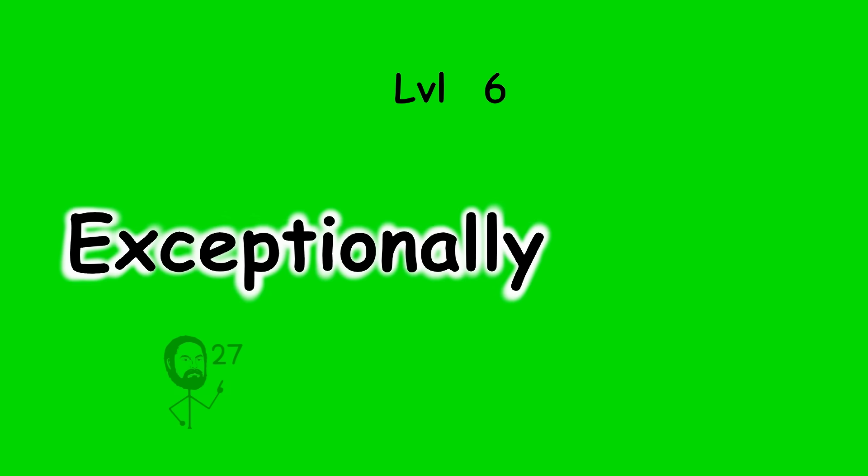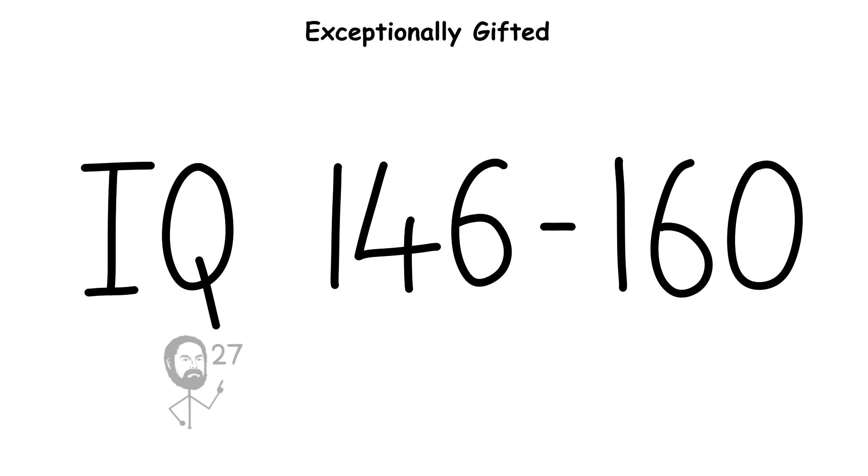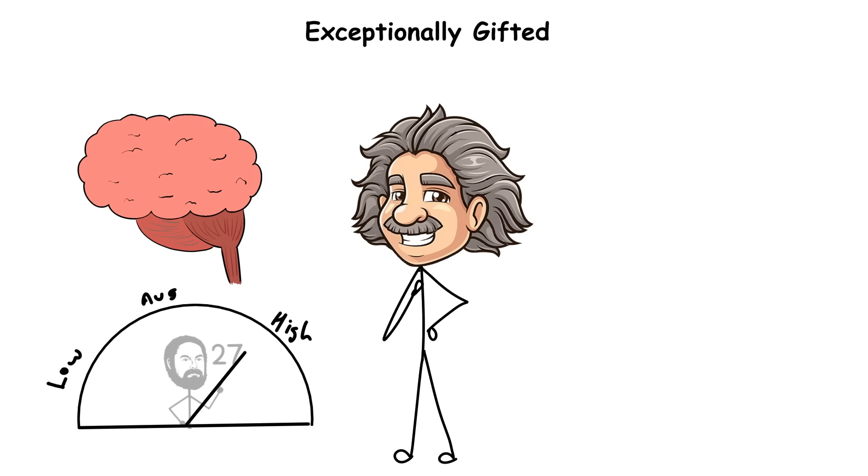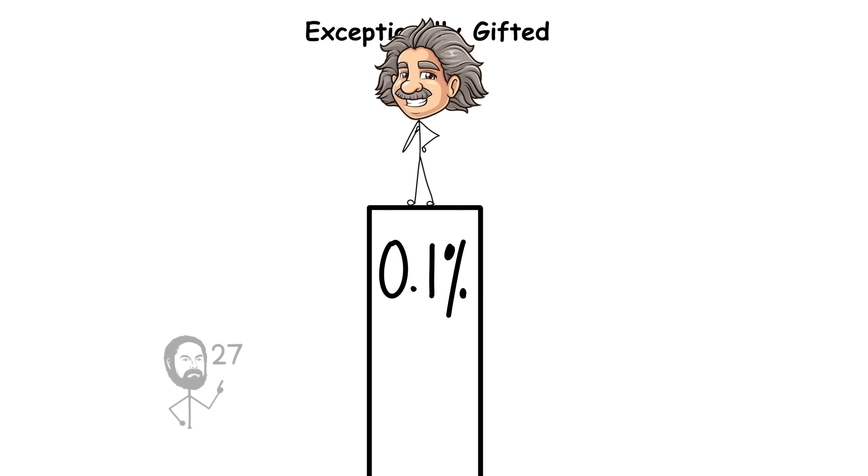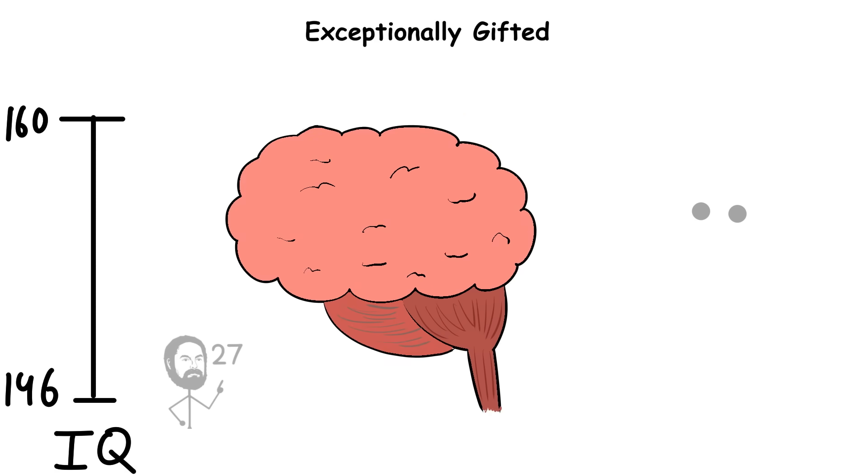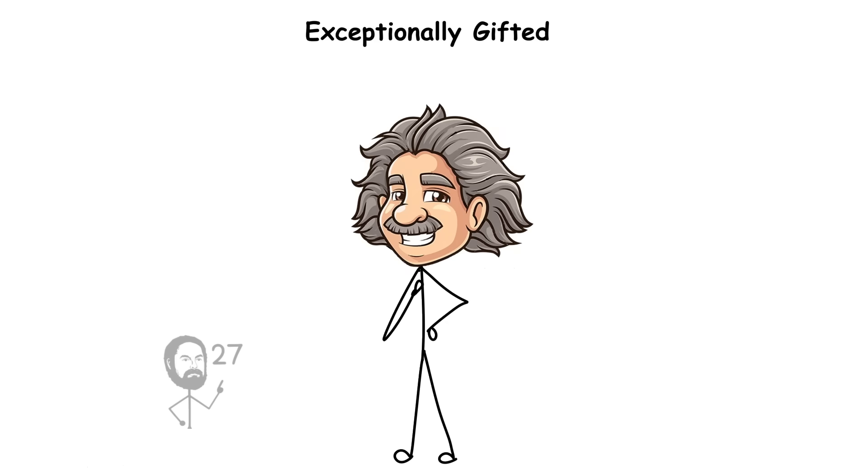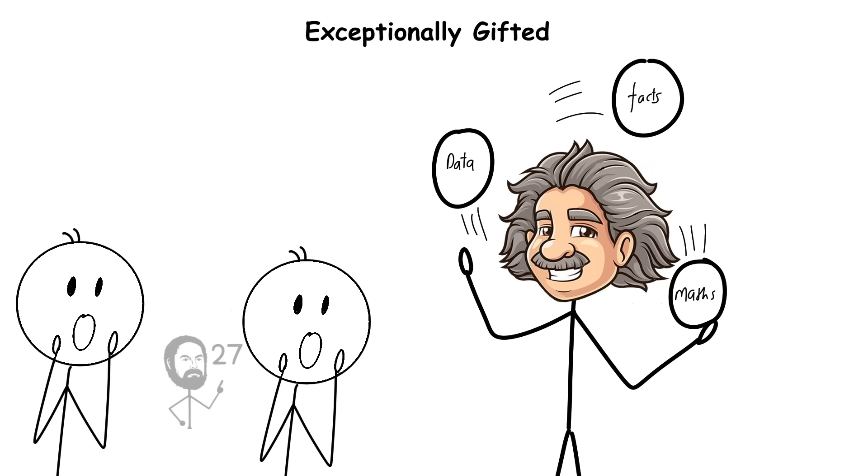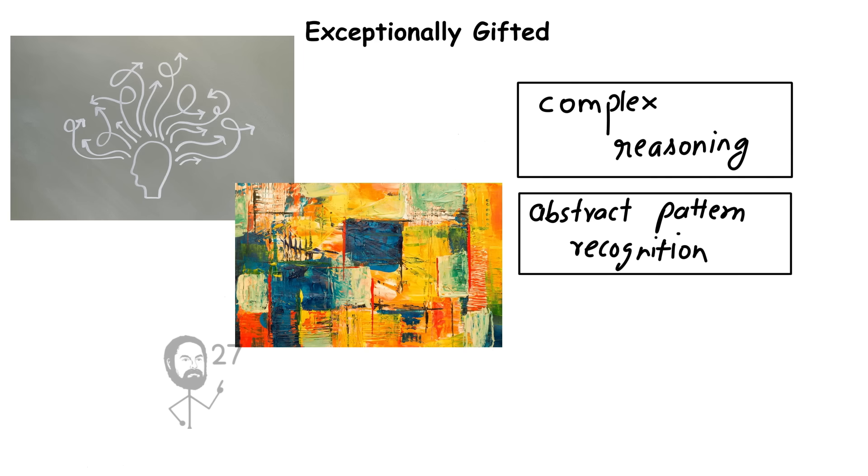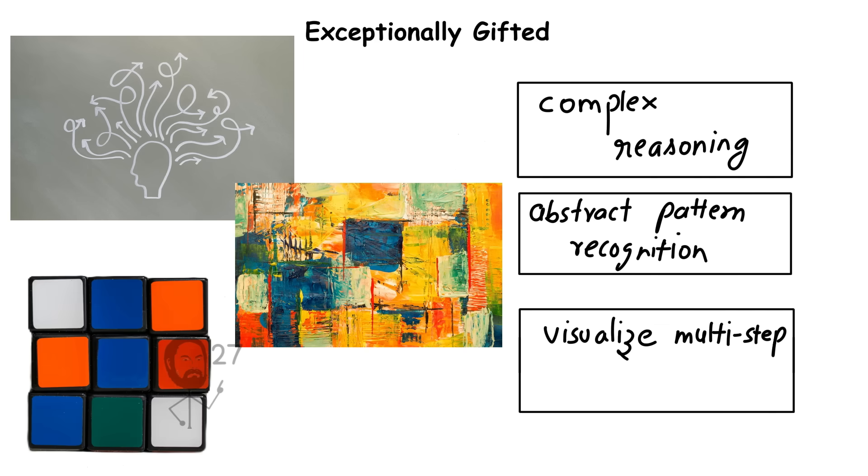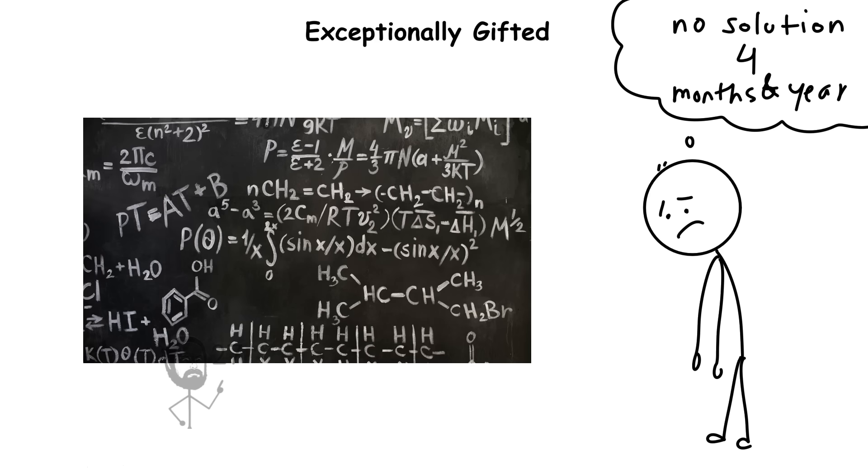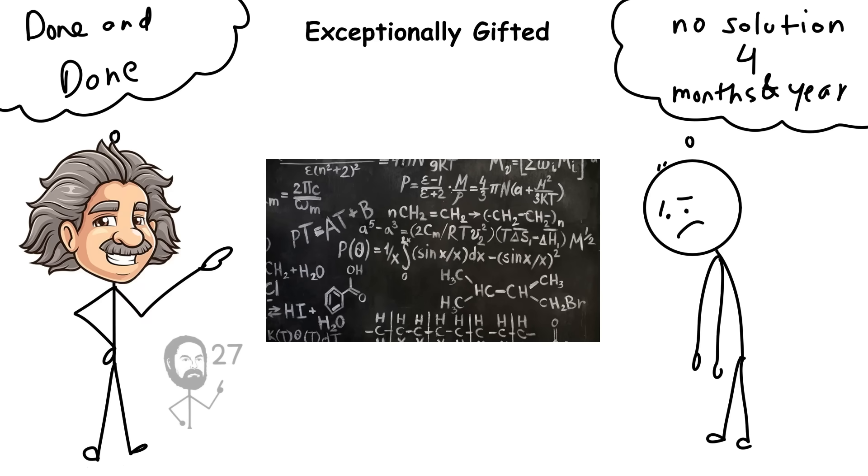Level 6, Exceptionally Gifted IQ 146 to 160, an IQ between 146 and 160, represents individuals whose intellectual performance is profoundly beyond the norm, typically the top 0.1% of the population. At this level, the brain processes information with extraordinary precision and speed, allowing the individual to analyze, synthesize, and apply knowledge at a rate that feels intuitive rather than learned. They often demonstrate early mastery of complex reasoning, abstract pattern recognition, and the ability to visualize multi-step problems in their entirety. Concepts that take most people months or years to grasp can be understood almost instantly when presented in coherent form.